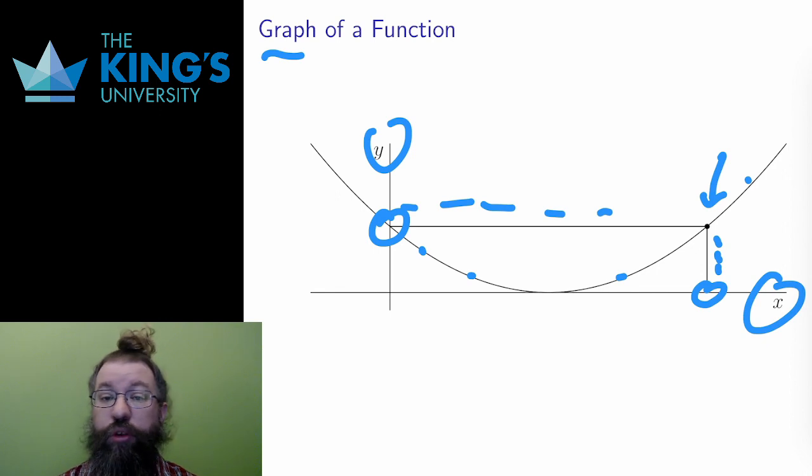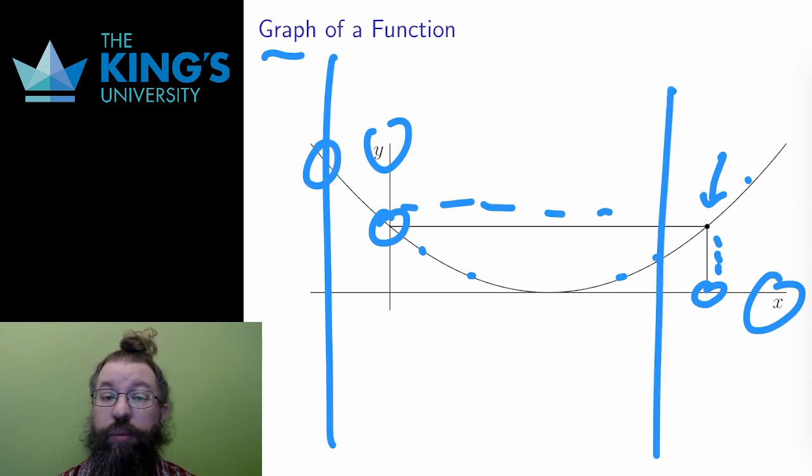You may know this as a vertical line test. If you draw a vertical line, it only crosses the graph of a function at most once. There are many shapes that can be drawn in the plane. Among those shapes, graphs of functions have to satisfy this vertical line test.